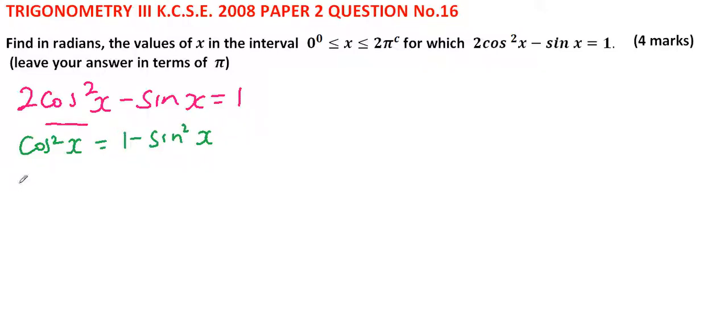we get 2(1 - sin²x) - sinx - 1 = 0. This helps us have one unknown, that is sinx.